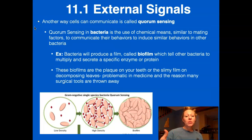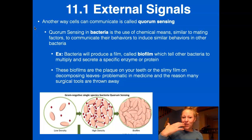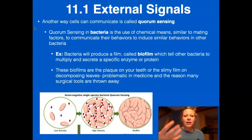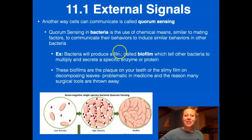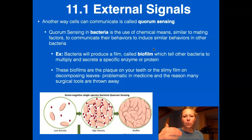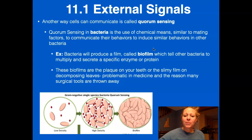Another way cells communicate is through quorum sensing. This is how biofilms are produced — like the plaque that grows on your teeth. When bacteria find a material that's highly successful for them to proliferate on, they produce a film called a biofilm. This communicates to all other bacteria to multiply, saying 'this is a good spot,' and signals them to secrete specific enzymes or proteins to accomplish a task. Biofilms also form as the slimy film on decomposing leaves.